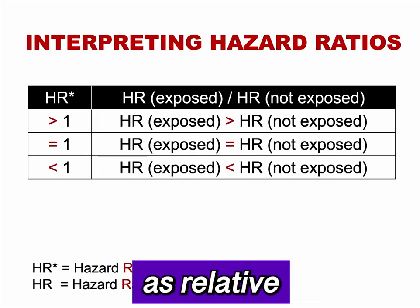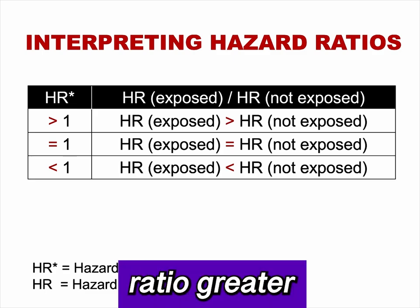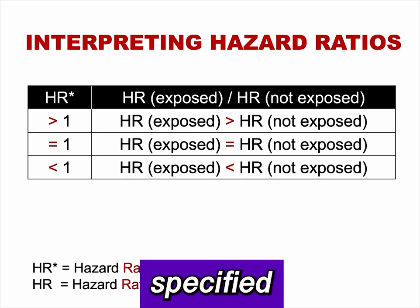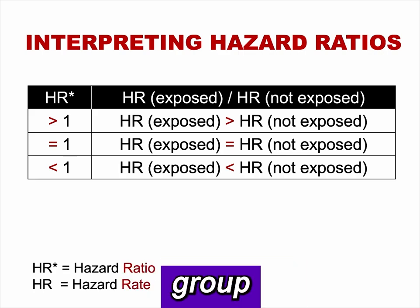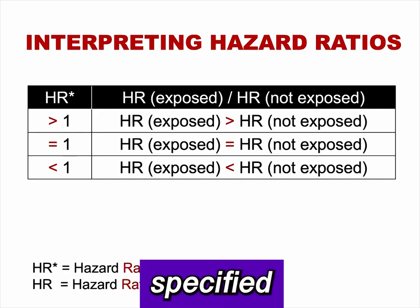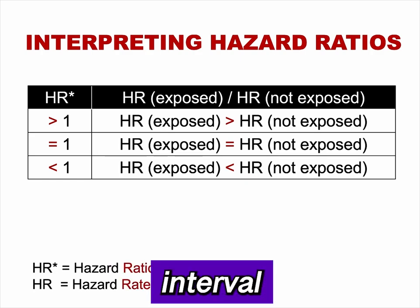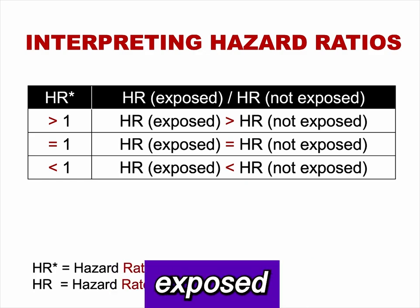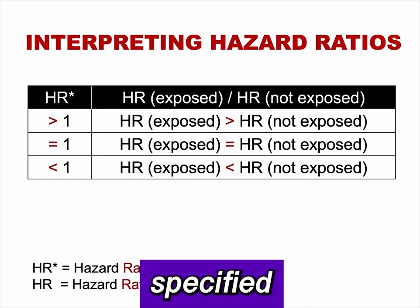Hazard ratios are interpreted in the same manner as relative risk and odds ratios. A hazard ratio greater than one indicates that the hazard rate of the outcome in the exposed group is greater than the hazard rate in the not-exposed group over the specified time interval. A hazard ratio equal to one indicates no difference between the two groups. A confidence interval for a hazard ratio that includes one indicates no statistically significant difference between groups. A hazard ratio less than one indicates that the hazard rate in the exposed group is lower than in the not-exposed group.